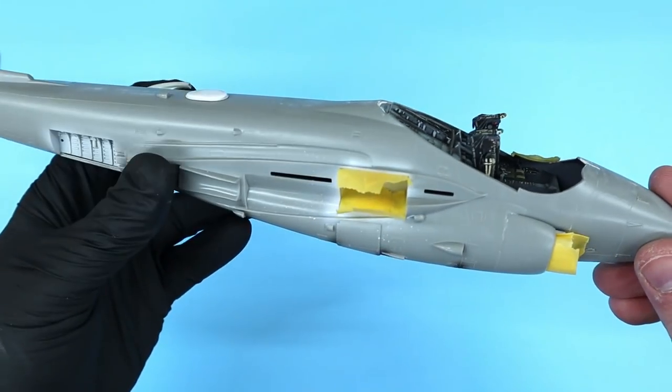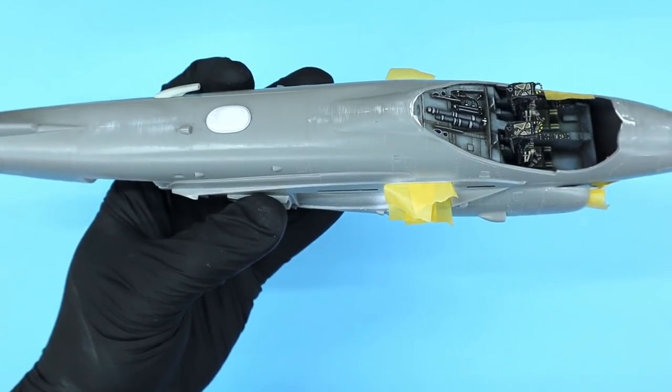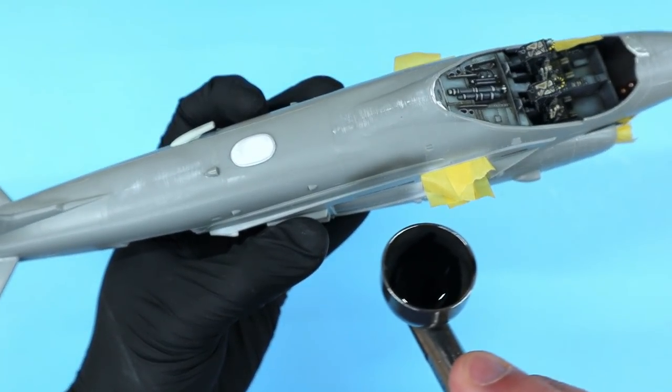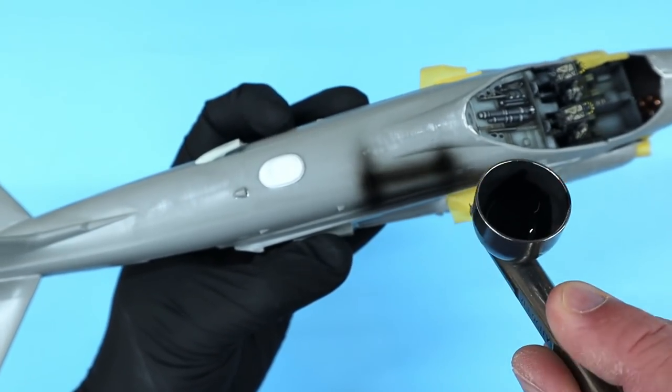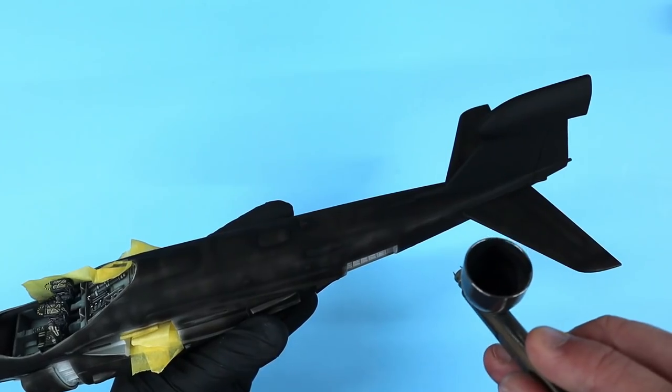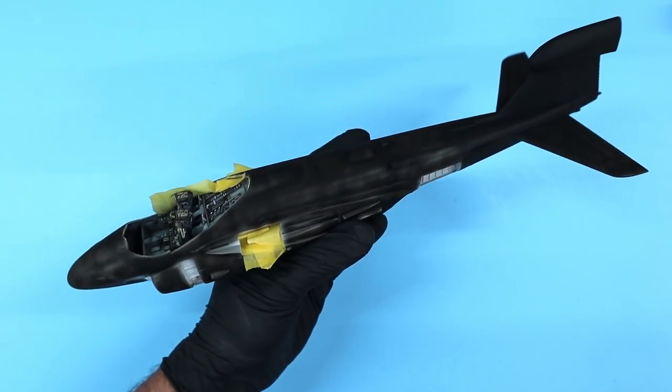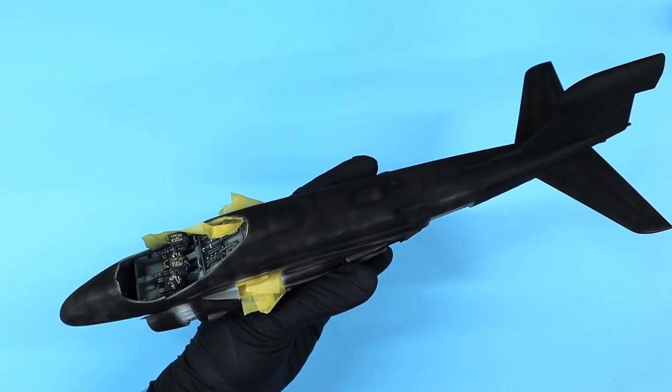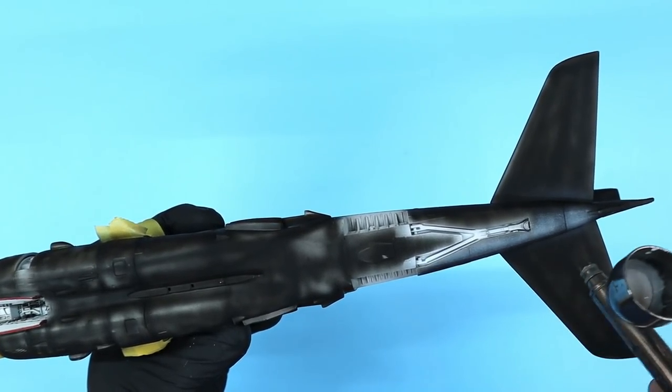Now that I had the fuselage assembly complete, I could mask off the intake and main gear bay areas and start to get some paint down. I decided to do a lazy man's black basing by spraying a splotchy coat of Tamiya flat black over all of the surfaces. I followed this up with a coat of Tamiya gloss white on the under surfaces, building it up a little at a time.